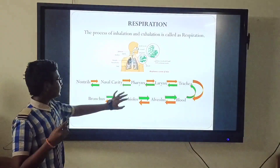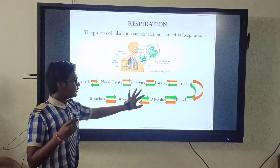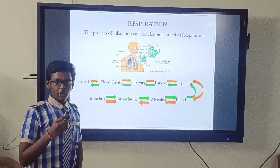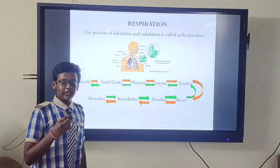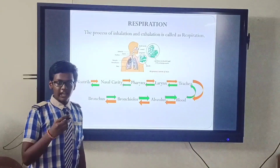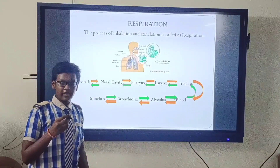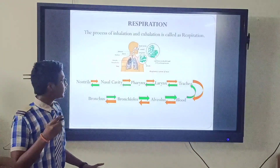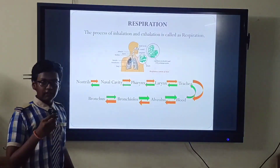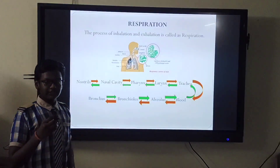Next, air enters into the pharynx. The pharynx is the common passage of both the digestive and respiratory systems. The epiglottis, a flap-like muscular valve, controls the movement of food and air towards their respective passages.